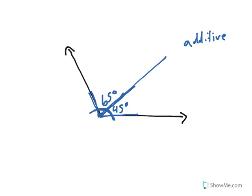So here we have 45 degrees, which is the smaller angle, plus 65 degrees, the larger angle, will give us a total of 110 degrees, which means that the measure of this angle is 110 degrees.